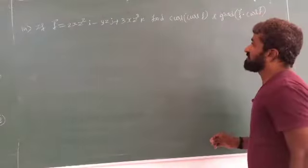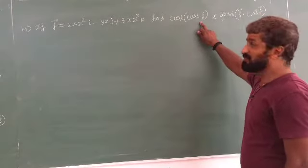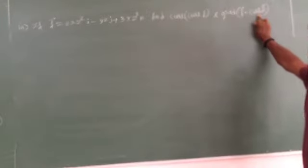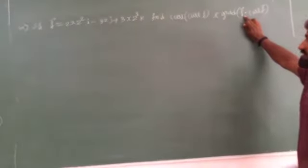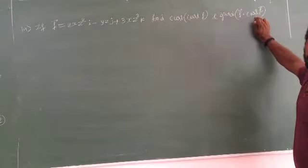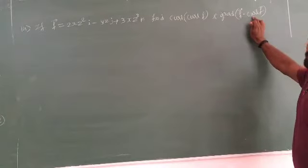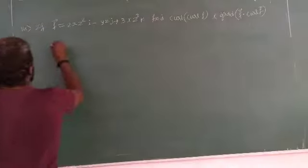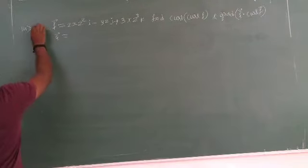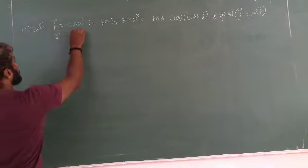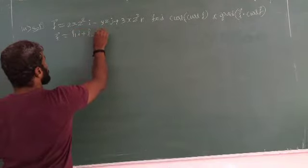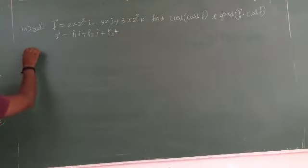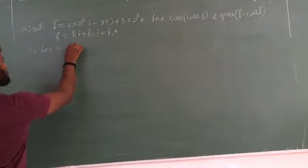Next example: find curl of curve F, gradient of function dot curl F. This is the concept. Function F is equal to 2xz² i minus 3z³ j plus 3xz³ k. We need to find the curl of F.